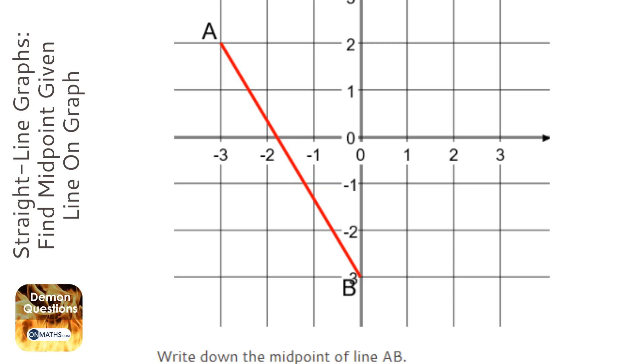We're going to go across first, so we go across 1, 2, 3 squares. So we jump 3 squares. And then to go down we go 1, 2, 3, 4, 5. So we go down 5 squares.